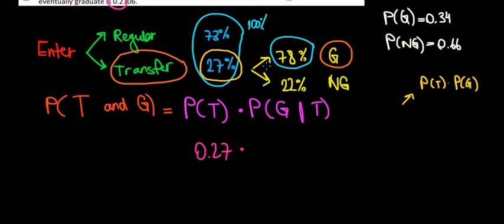Whenever we read probabilities, we go to the end and see the probability of graduating given, or in other words if, we are a transfer student. So we are a transfer student and then we graduate. If that happens, it's a 78% probability. So that is 0.78.